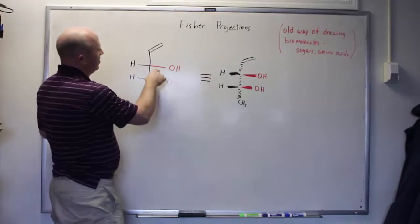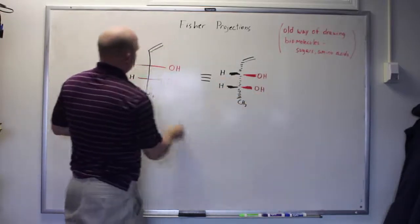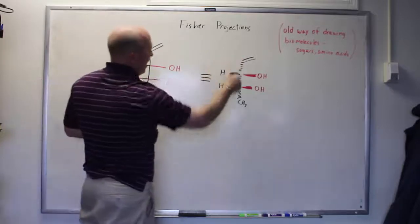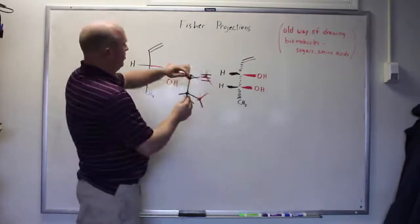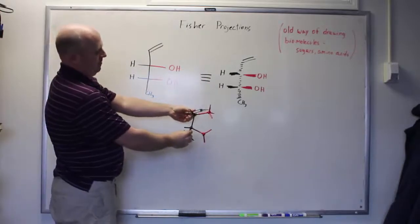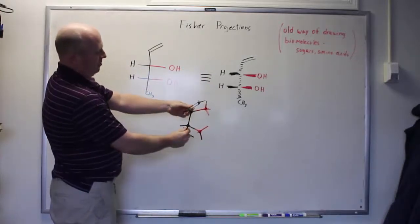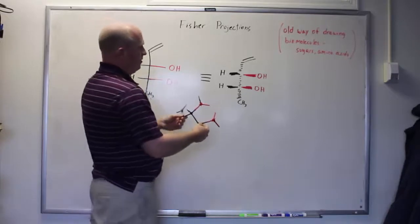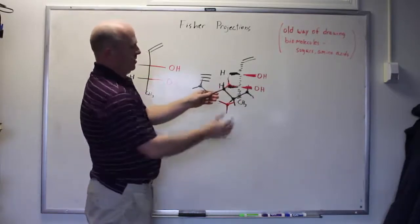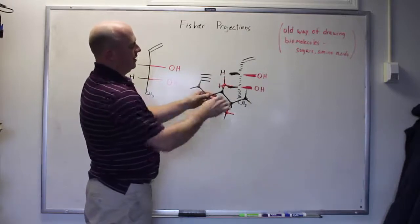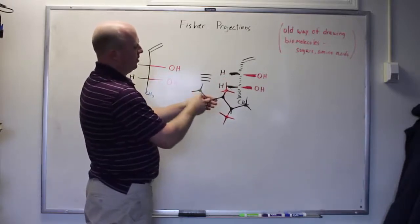So in other words, this OH is coming toward us, this OH is coming toward us, these hydrogens are coming toward us, and then everything else is pointed back away. Which is why I was holding this model kit this way — these are coming toward you, these are going back away. But the way we traditionally represent the molecule would be to unfold it and make the carbon chain be zigzag in the background, with the carbon skeleton zigzagged and the OHs extending off of it.